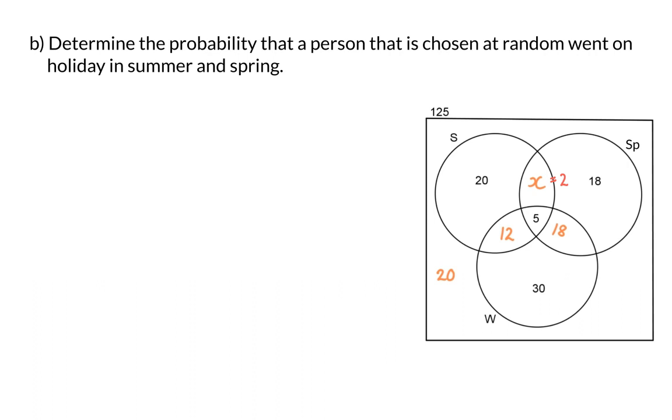Here we need to realize that the word only does not appear, and that means it includes the people that went on holiday in summer and spring, as well as those people who went on holiday in all three seasons. This means that 7 out of the 125 people went on holiday in summer and spring, and the probability of choosing one of those people will be 7 out of 125.